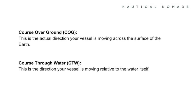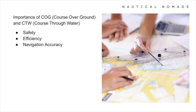Course through water, or CTW, is the direction your vessel is moving relative to the water itself, without accounting for currents or tides — essentially the path your vessel cuts through the water, often visible as the wake behind you. Understanding both COG and CTW is critical for accurate navigation: comparing them lets you detect and compensate for drift, ensuring you avoid hazards, adjust steering to minimise wasted fuel, and maintain awareness of your actual position using GPS for COG and a compass for CTW.